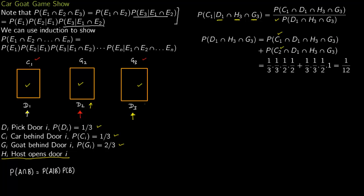Everything here is independent. Car is behind door 1 with probability one third, contestant picks door 1 with probability one third, host picks door 3 with probability one half (since car is behind door 1, host could open either door 2 or door 3), and there is a goat behind that door with probability one half. So the first term gives one third times one third times one half times one half.